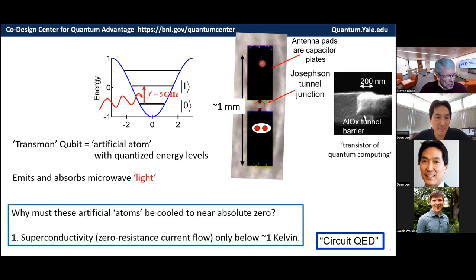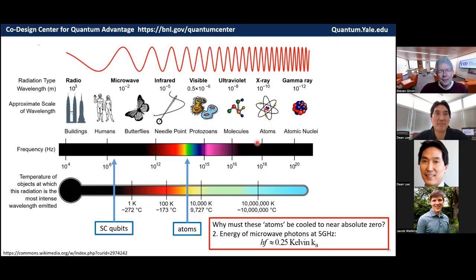So why do we have to cool these things down near absolute zero? Well, the aluminum has electrical resistance until you cool it below about one Kelvin and it becomes a superconductor and there's no more friction. And the electrons can slosh back and forth for a very long time. So you need a refrigerator.